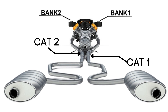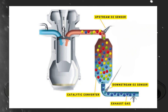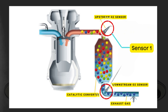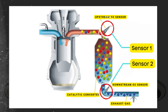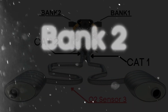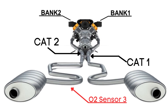Each bank has its own exhaust line and each exhaust line is equipped with two catalytic converters. Each catalytic converter typically has two or three oxygen sensors. The upstream sensor, referred to as sensor one, is positioned before the catalytic converter. Then there's the downstream sensor, known as sensor two, located after the catalytic converter. In some cases, there might even be a third oxygen sensor further downstream, positioned after sensor two. So when we talk about bank two sensor three, we're focusing on the third oxygen sensor that's downstream from the engine on bank two.